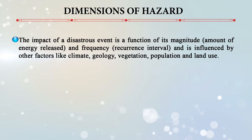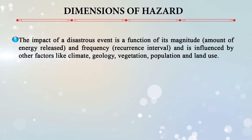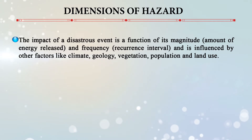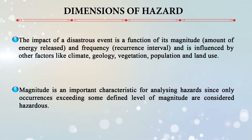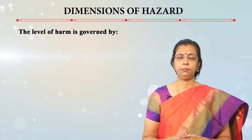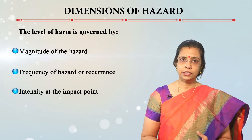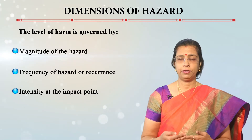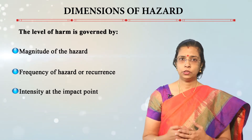The impact of a disastrous event is a function of its magnitude — the amount of energy released — and frequency, that is, the recurrence interval. This is influenced by factors like climate, geology, vegetation, population, and land use. Only occurrences exceeding some defined level of magnitude are considered hazardous. The level of harm is governed by magnitude, frequency, intensity, and the impact point — for example, the epicenter of an earthquake measured on the Richter or Mercalli scale. In general, the frequency of an event is inversely related to its magnitude.